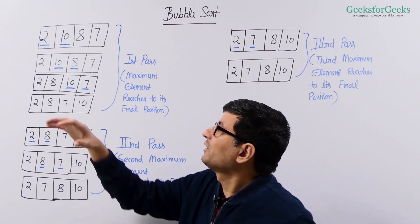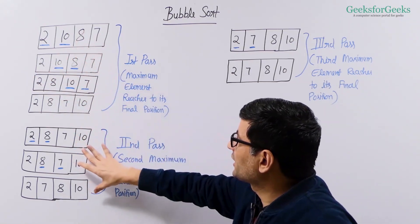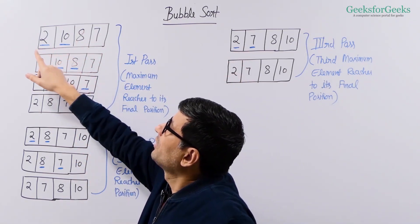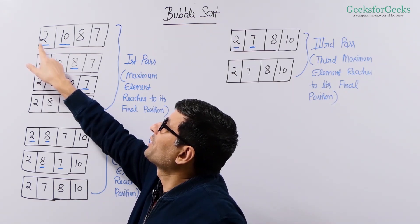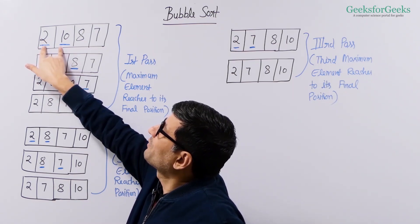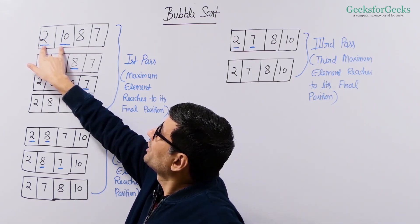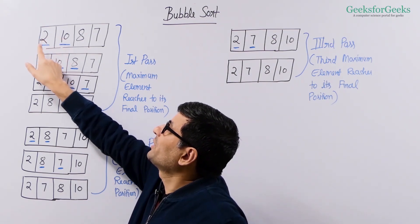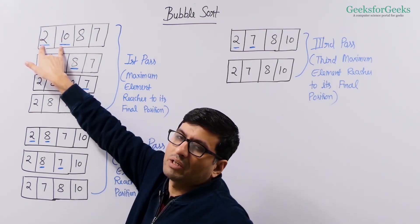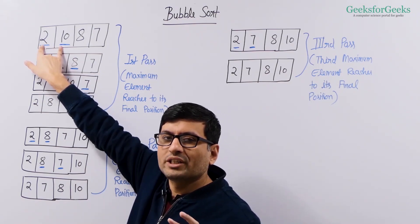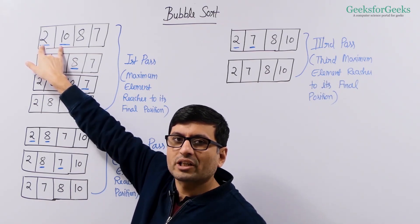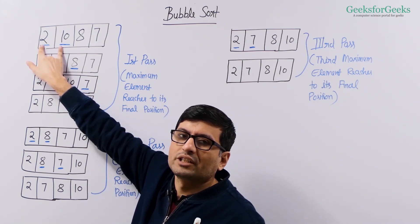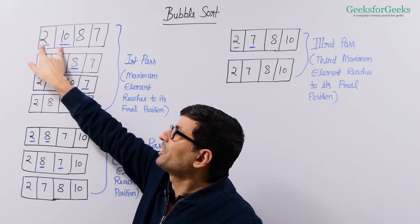Let's now see the working. This is the first pass, this is the second pass, and this is the third pass. We have this array we want to sort. What we do is we compare the adjacent elements beginning from the first element. We compare these two elements and since this element is smaller than this element, we do not do any swapping. We do swapping when the adjacent elements that we are comparing are out of order, which means the element that comes before is greater than the element that comes after it.